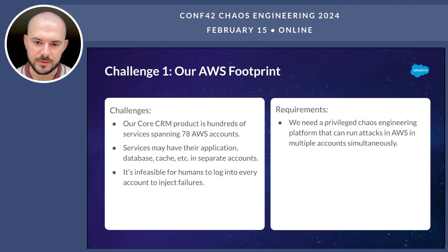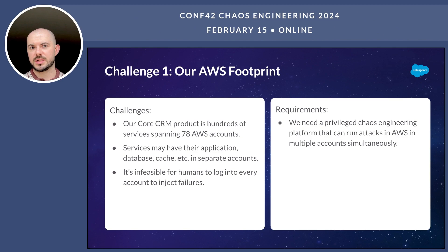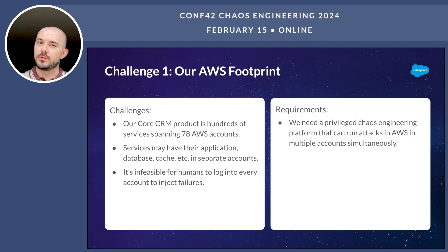Let's talk specifically about our AWS footprint. The core CRM product that most people think of when they think of Salesforce is hundreds of services spanning across at least 70 to about 80 AWS accounts. For one contrived example, a service might have their application container running on one shared compute cluster in an account over here, but then have their database, cache, and S3 buckets all in different accounts. So it's infeasible for humans to log into every AWS account we have and do failure experiments — at the very least, we need to script that. This translates to a requirement that we need a privileged chaos engineering platform that can run AWS attacks in multiple accounts simultaneously.